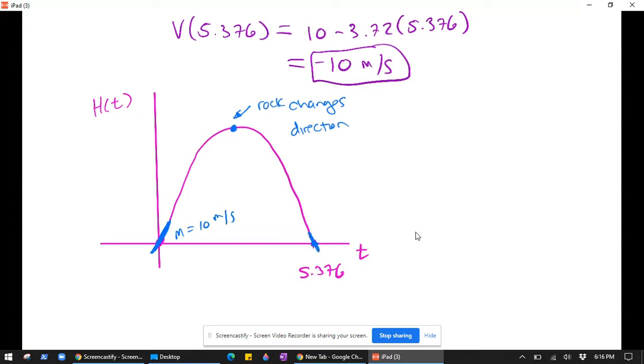But by symmetry of the situation at this moment, the slope is completely the opposite of what it was when it was launched. So the symmetry in this situation can kind of help us make sense of this.